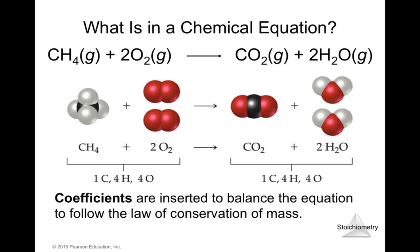Another important part of chemical equations are the coefficients. They are inserted to balance the equation and follow the law of conservation of mass. For the methane equation, the coefficients are 1, 2, 1, and 2. They go in front of the molecules and vary depending on what balance is needed to have the same number of atoms on each side.